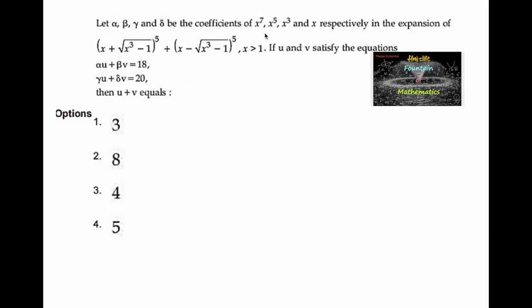Given that alpha, beta, gamma, and delta are the coefficients of x⁷, x⁵, x³, and x respectively in the expansion of (x + √(x³-1))⁵ + (x - √(x³-1))⁵, where x is greater than 1. If u and v satisfy the equations αu + βv = 18 and γu + δv = 20, then we need to find the value of u + v.